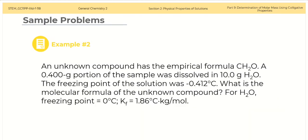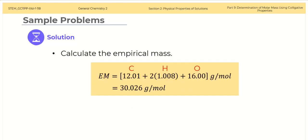Example 2: An unknown compound has the empirical formula CH2O. A 0.400 gram portion of the sample was dissolved in 10 grams of water. The freezing point of the solution was negative 0.412 degrees Celsius. What is the molecular formula of the unknown compound? For water, the freezing point is 0 degrees Celsius and Kf equals 1.86 degrees Celsius kilogram per mole. The empirical mass of CH2O is 30.026 grams per mole.